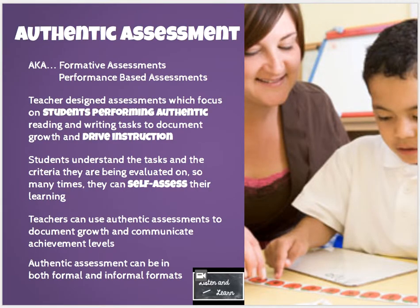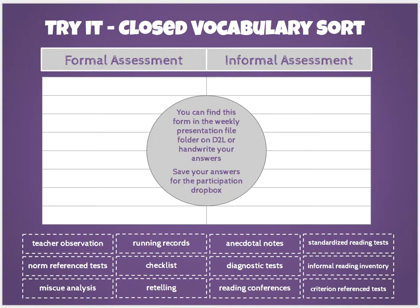The next form of assessment is authentic assessment — you can click on the podcast for more information. Then we're going to do a closed vocabulary sort. The closed vocabulary sort means you have headlines at the top and you put the vocabulary below in categories. This sort can be found on D2L in the Weekly Presentation File folder, but you can just take a piece of paper and write the two columns. Most importantly, click on the next slide — it has the answers listed and a video explaining each kind of assessment. I do want to make sure you listen to that video, because it gives great examples of each form.